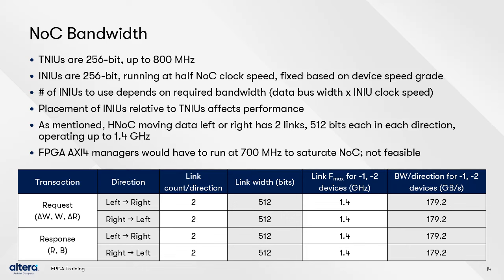The number of INIUs you'll need to use for a design will depend on the bandwidth required, simply calculated as the data bus width — typically 256 bits or 32 bytes — multiplied by the INIU clock speed. TNIU bandwidth will depend on the target memory IP used and the option selected. Horizontal bandwidth and performance will depend on the number of switches the data channels must pass through to reach their destinations, so the placement of the INIUs relative to the TNIUs is important.